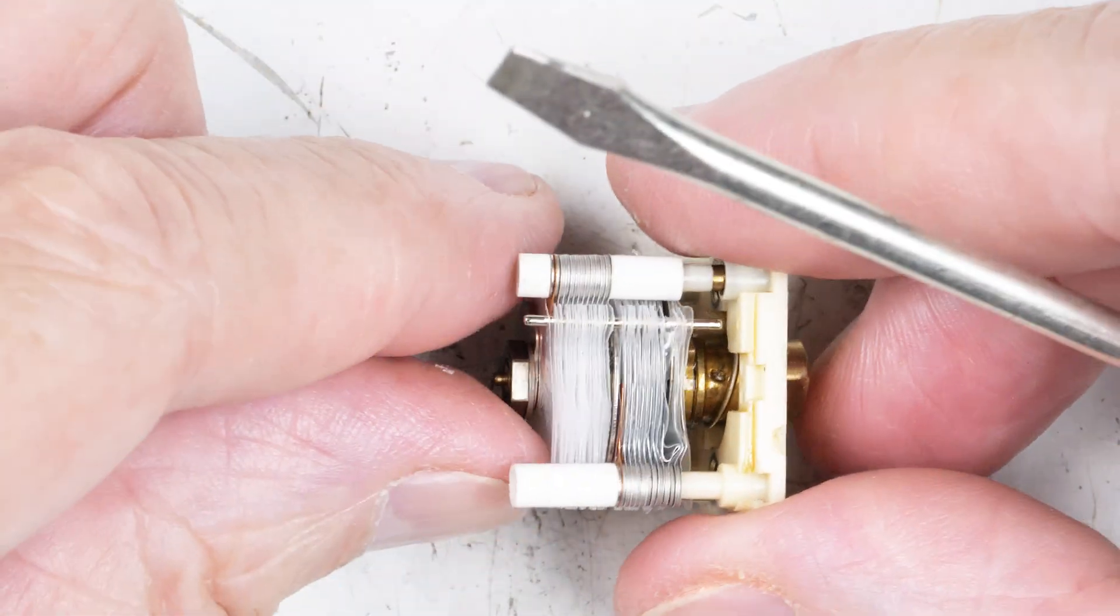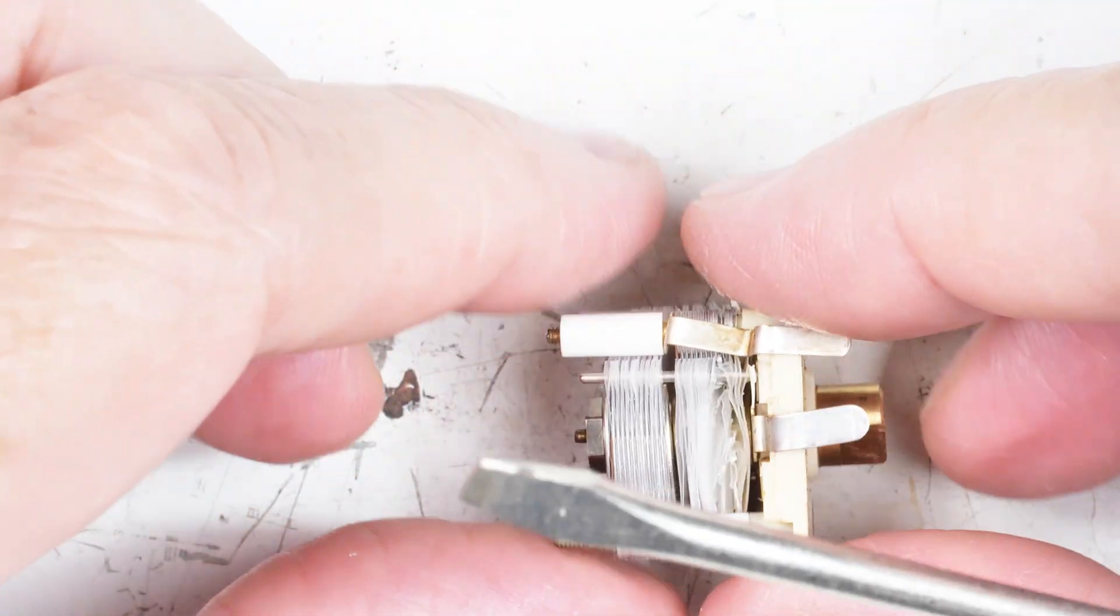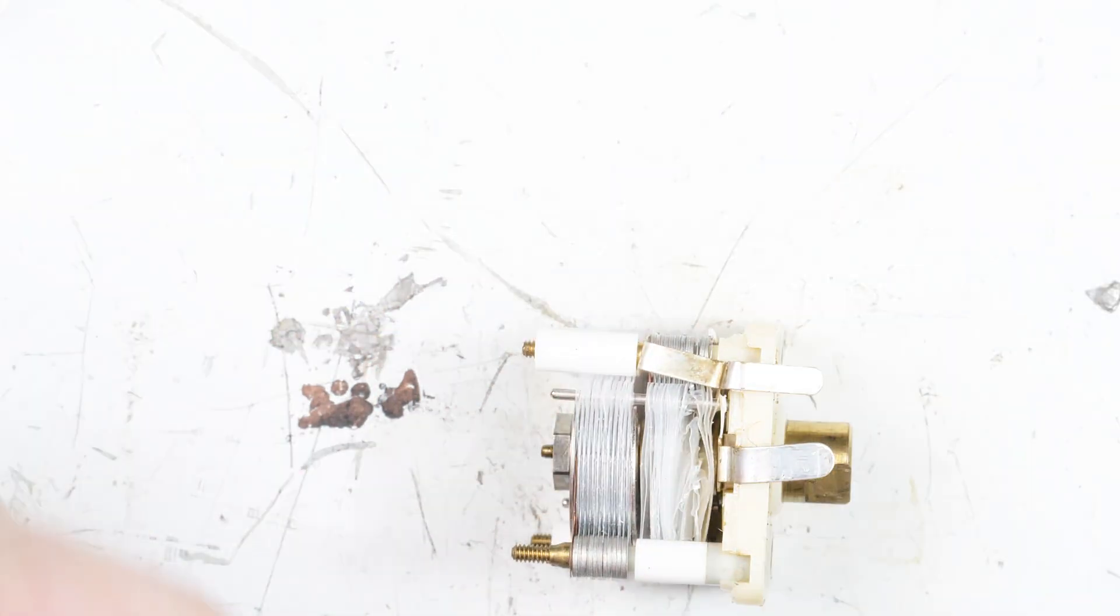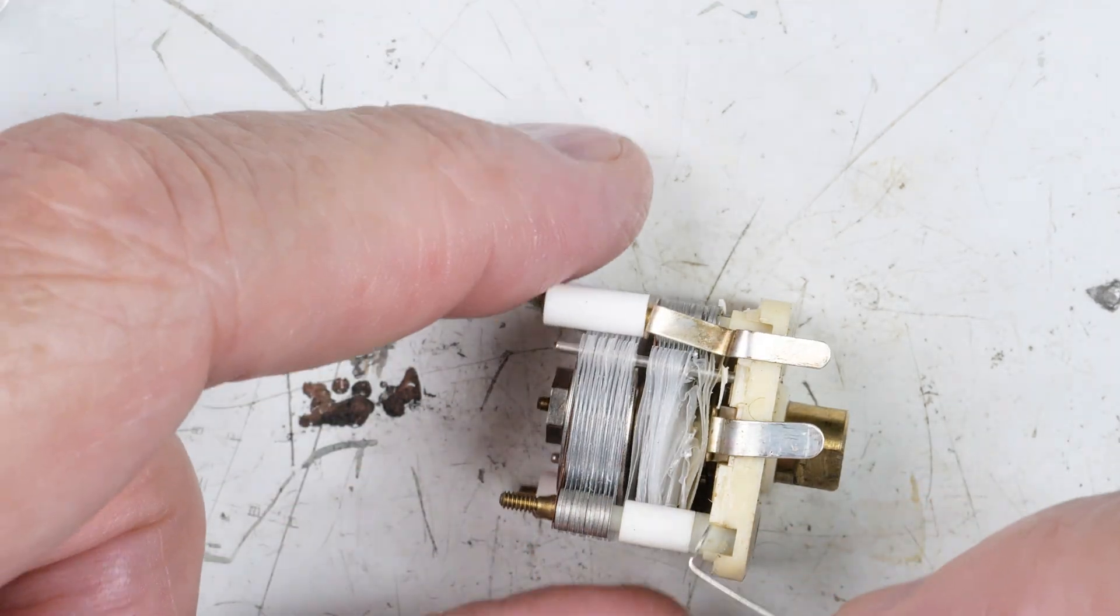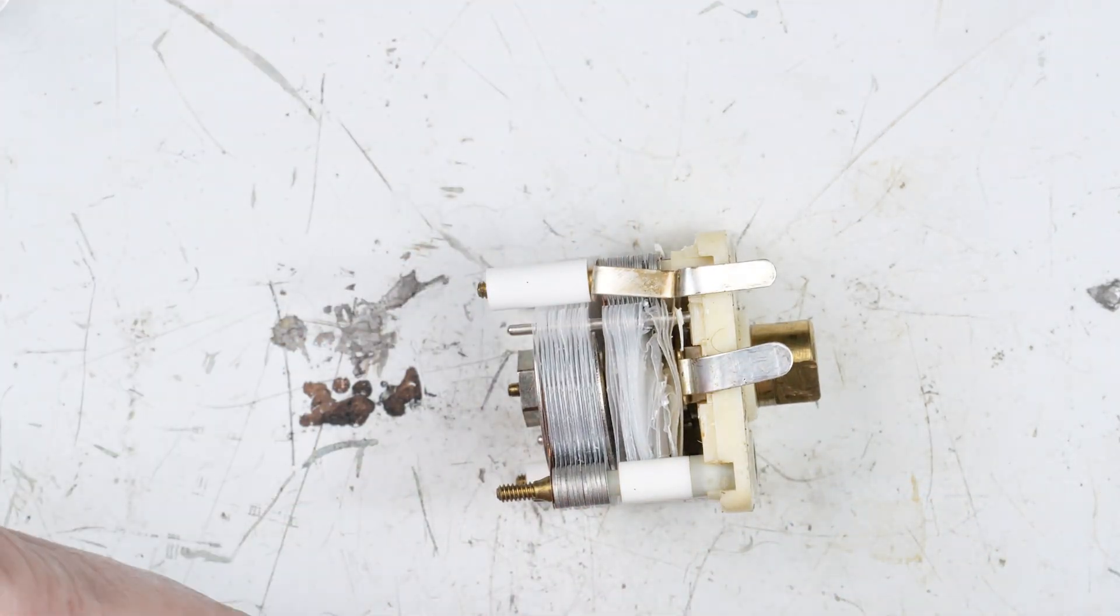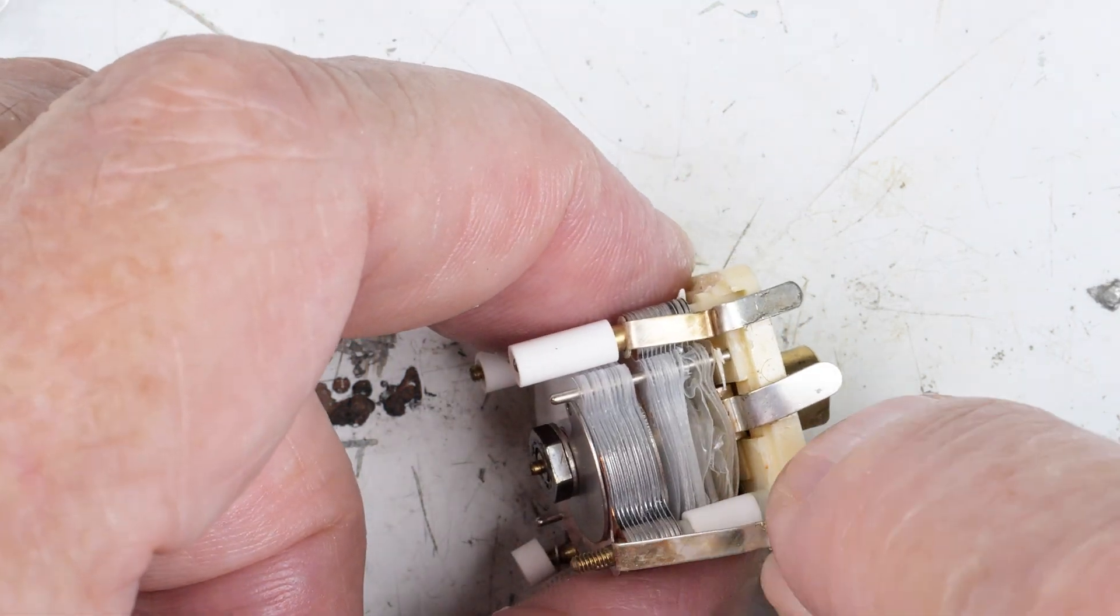So that's the outer cover. Now let's look at this thing. It's falling apart in my hands. Yeah, I've already lost one of these contacts that should be here.